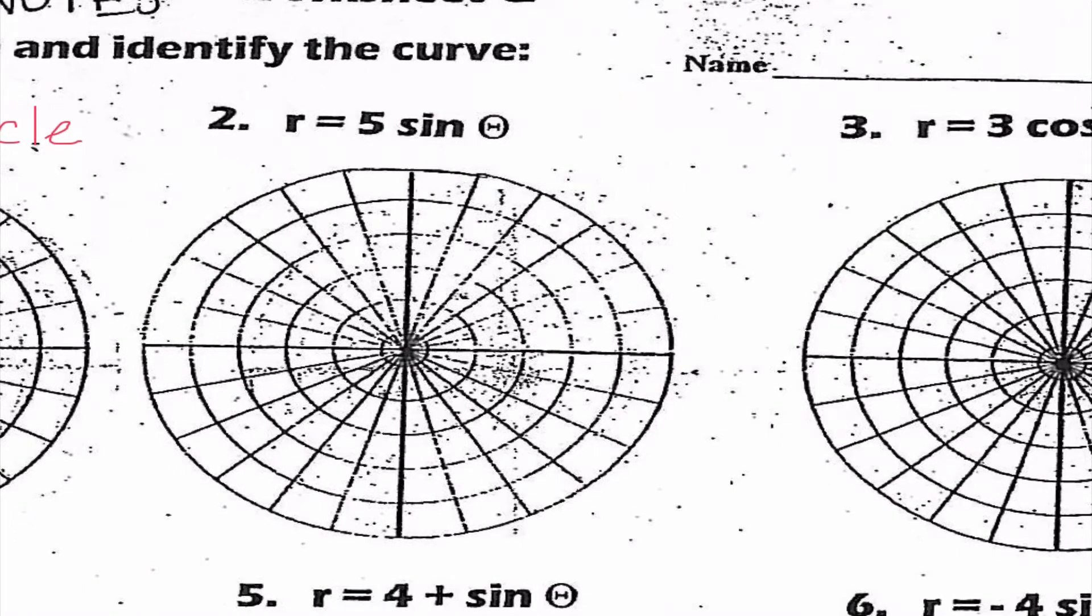Okay, number two, r equals five sine theta. Some of you guys might be thinking that this looks like a rose because it is in that form. However, our n value here is one. So we said if that is the case, it is actually a circle. Now since it is a positive sine, remember we said sine goes with y. So I'm going to go up one, two, three, four, five, and put a point at the pole and draw our circle.